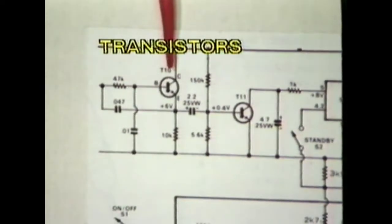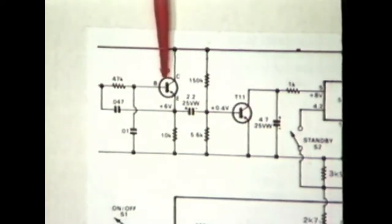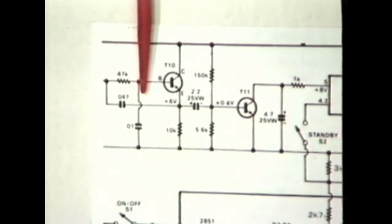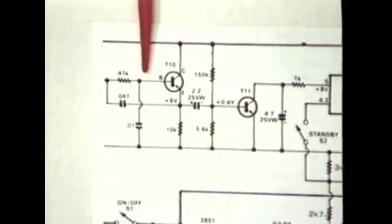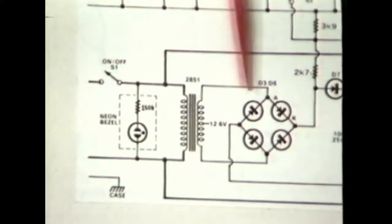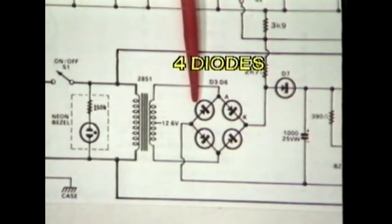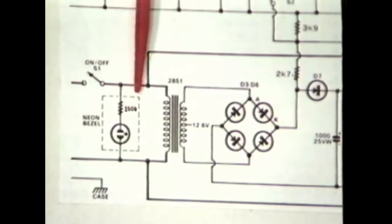These are transistors — they are also polarized and incorrect connection quite often destroys them. This is the connection between this resistor and this transistor. The little bridge over the other connection means that the two connections are not joined. When two connections do join, we use dots. This is a transformer showing two coils and a central core. This coil is connected to a network of four diodes — watch out for this diamond-shaped arrangement of diodes, it's used in many circuits. The two circuits each side of the transformer are isolated from each other.